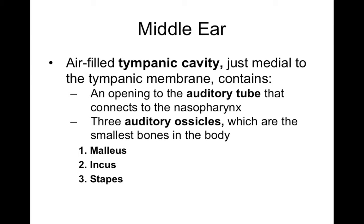The middle ear is that air cavity just deep to the tympanic membrane. It contains your auditory ossicles: the malleus, incus, and stapes. These are the smallest bones in the body, and their function is to transmit vibrations to the cochlea, which can be transduced into sound. The middle ear is also connected to the auditory tube or eustachian tube, which helps equalize pressure and prevents too much pressure from building up and damaging structures in the middle ear.